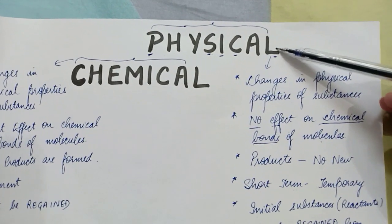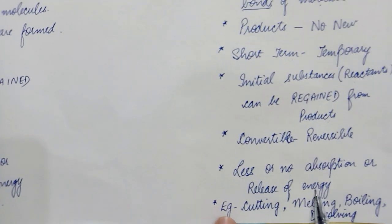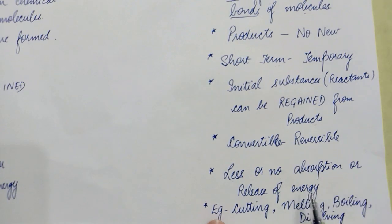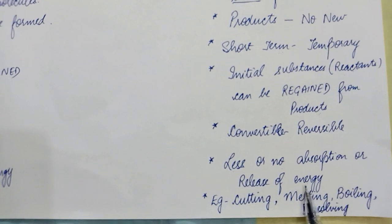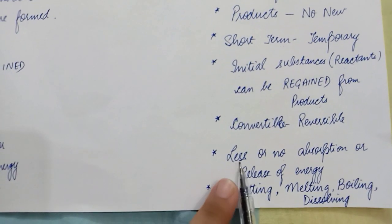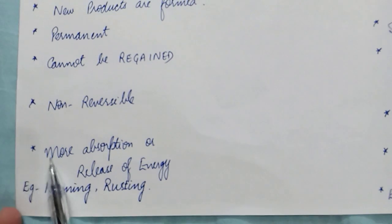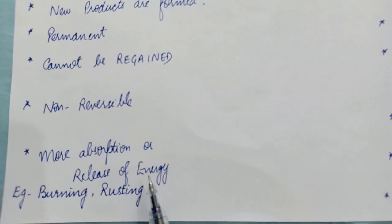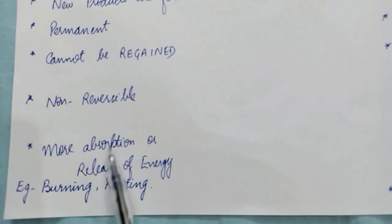The last alphabet, L in 'physical,' will remind you of less. The point becomes: less or no absorption or release of energy. Whenever any physical change takes place, there is either less or no absorption or release of energy. The opposite of less is more — in chemical changes, there is always more absorption or release of energy. Whenever any chemical change takes place, there will definitely be absorption or release of energy, always more than in physical changes.